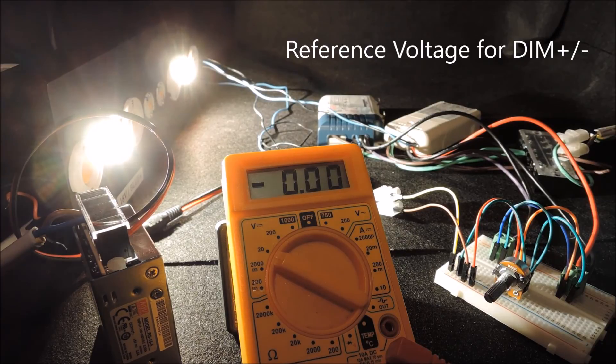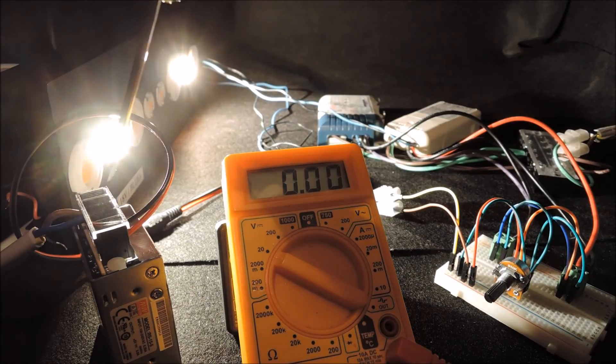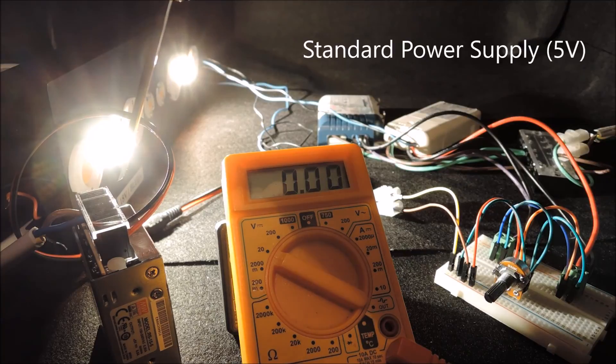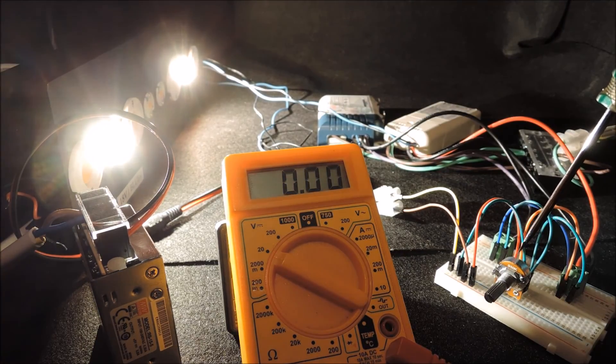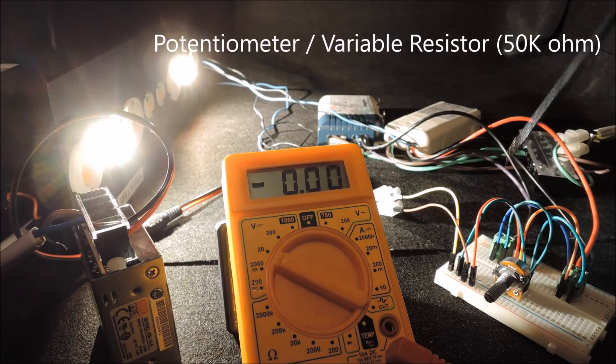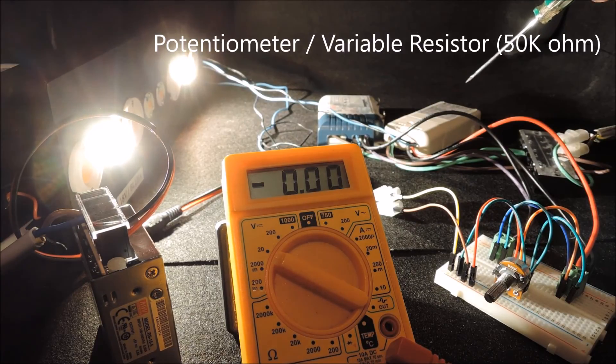To generate the reference voltage for the dim plus or minus, we have a standard power supply of 5V and a potentiometer or variable resistor of 50kΩ connected to the two LED drivers simultaneously.